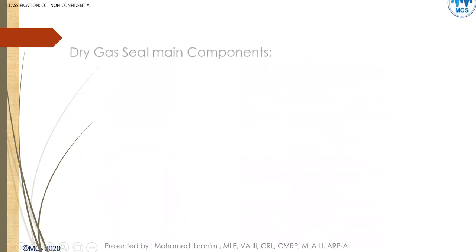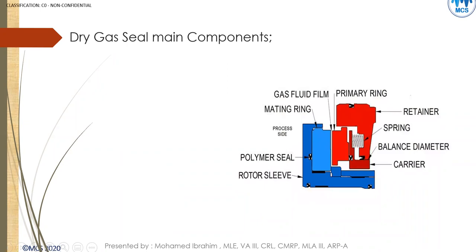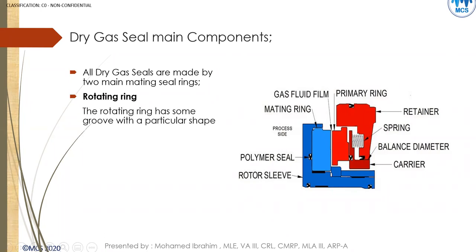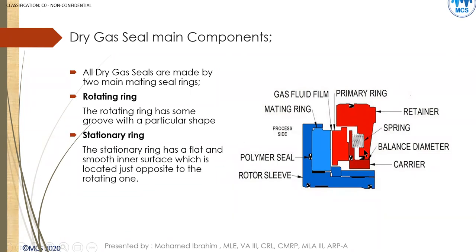The main components of a single dry gas seal are: the primary ring and secondary ring (also called mating ring, face and seat) — the main concept is the same regardless of terminology. We also have the spring to provide closing force, the carrier, the retainer, the sleeve, and O-rings throughout to ensure there is no leakage. The rotating ring has spiral grooves to create a compression effect. The stationary ring is a floating ring driven by the spring action.